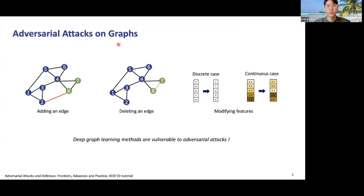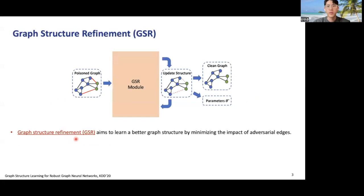Adversarial attacks on graphs means imperceptible perturbations on graph structure and node features. It is widely known that deep graph learning methods are vulnerable to adversarial attack. To mitigate this data issue, graph structure refinement methods have received growing attention. Graph structure refinement methods aim to learn a better graph structure by minimizing the impact of adversarial attacks during the message-passing procedure.